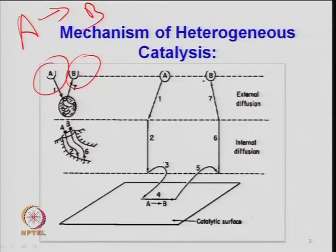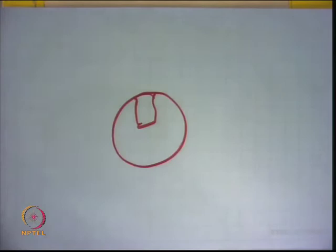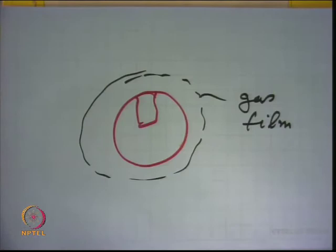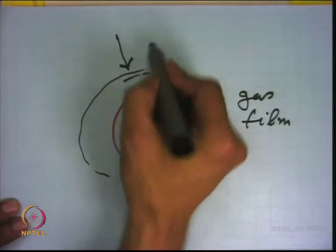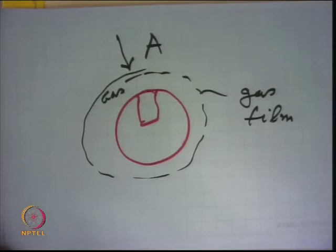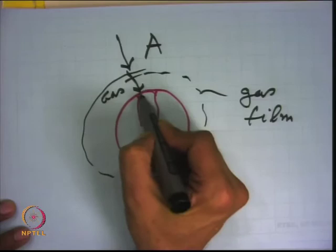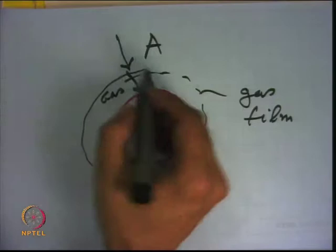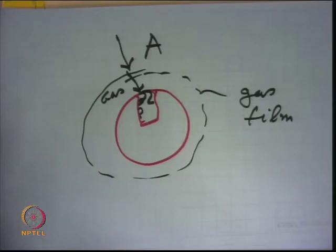Some reactant species which has crossed the gas barrier — if I show a spherical pellet with some pores and a gas film around it — the thickness of this film will depend on your operating conditions and the physicochemical properties of the gas. From the bulk, this gas comes to the surface of the solid. Then it has to cross this barrier and reach the surface of the solid. The gas has to diffuse inside because your active metal is deposited inside these pores. In the pore, gas A will adsorb, transform into some product, and the product will go back out.